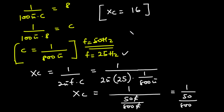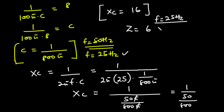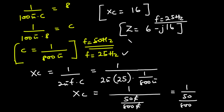So the impedance at frequency 25 hertz equals 6 minus j16. The real part, which is the resistance, is not affected by the change in frequency, so it remains 6. This is the new impedance when the frequency is 25 hertz.